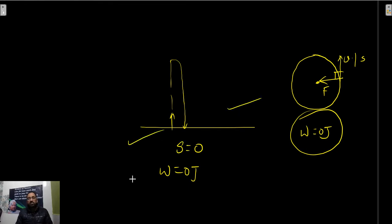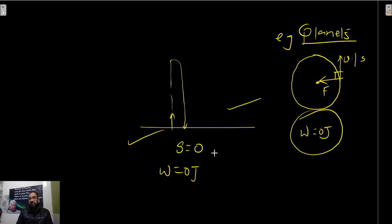These are a few examples to remember regarding work done. Planets revolve around the sun in a circular path - at that point work done will be zero. Remember the three types of work done: positive, negative, and zero work done.